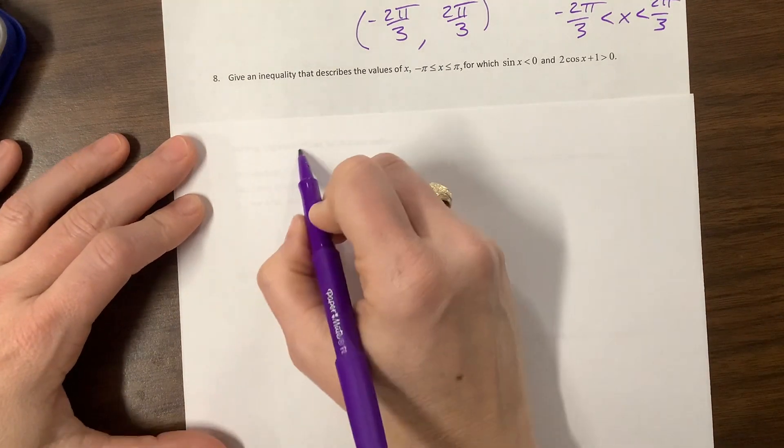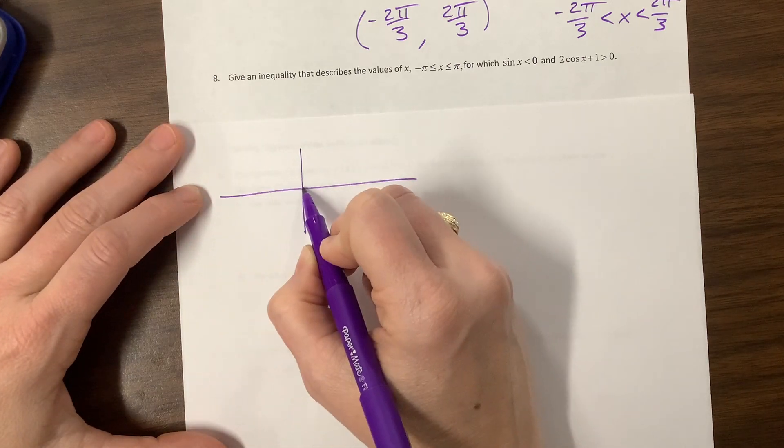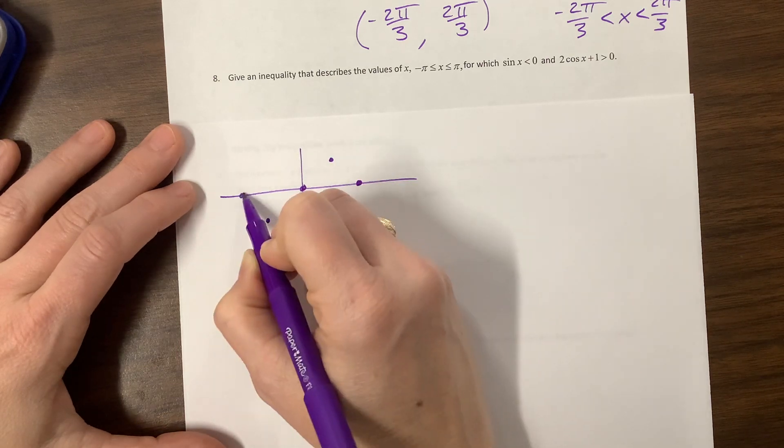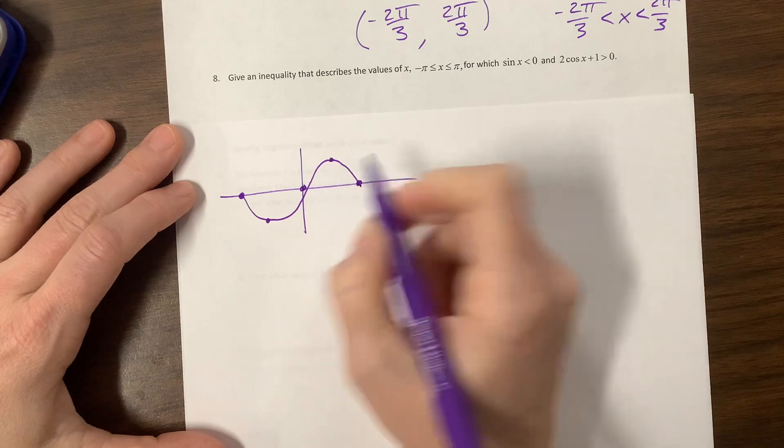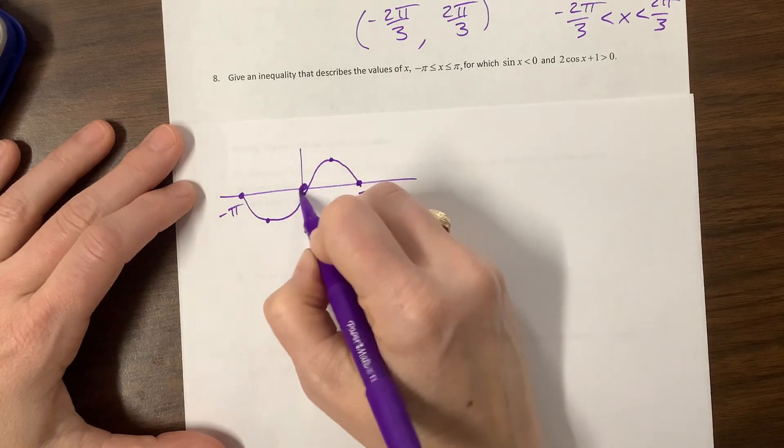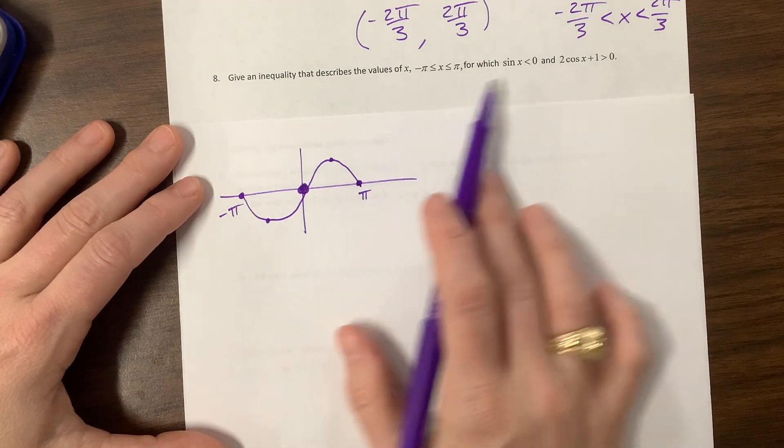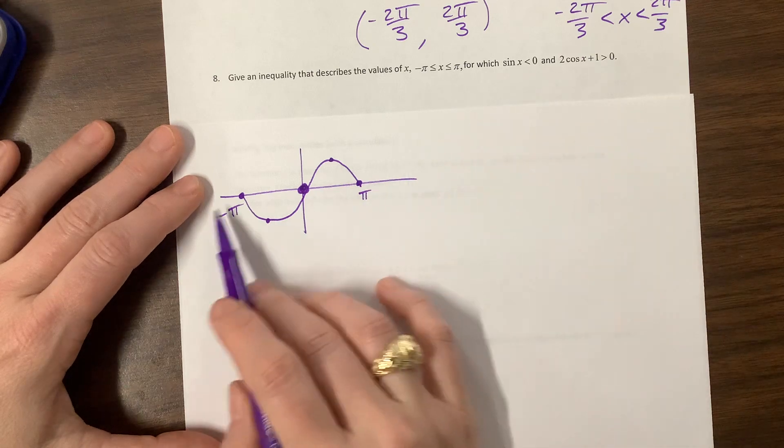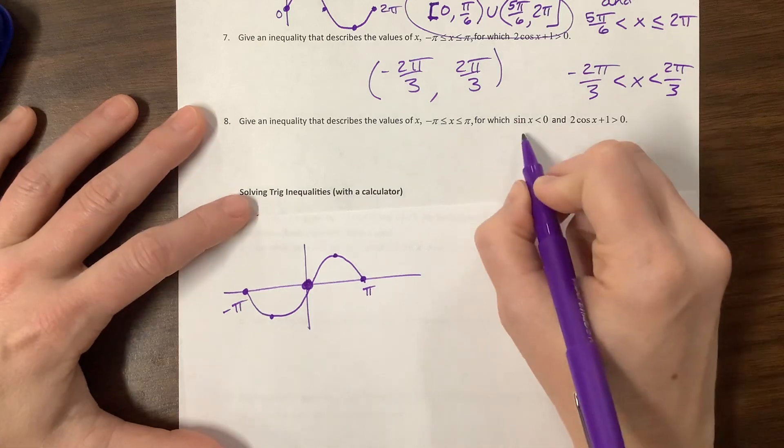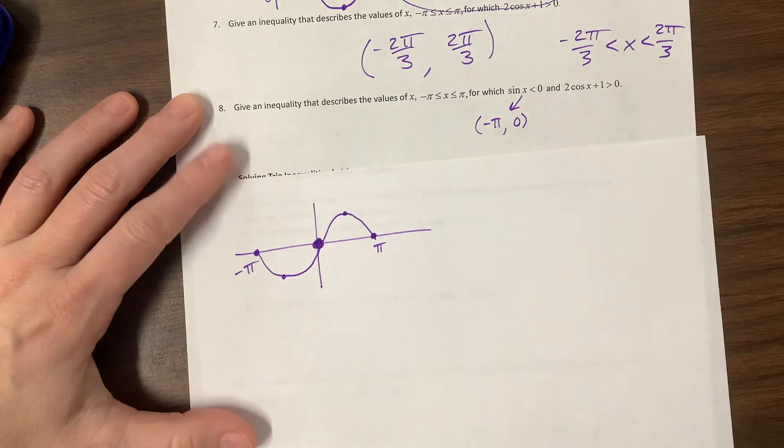One way to think about it is I think what I'm going to do is I'm going to graph sine between, here's pi and here's negative pi. So sine goes through 0, 0. Given an equality that describes the value for which sine is less than, so the first part of this, the sine is less than 0 part, would be from this part alone is going to be from negative pi to 0, but we can't include those. It equals 0s on the endpoints.